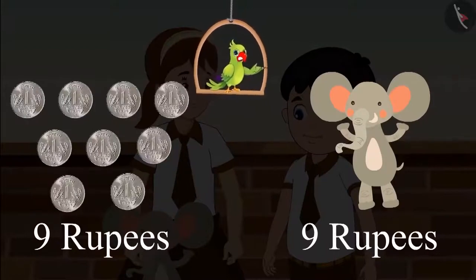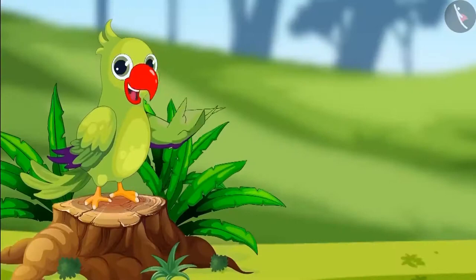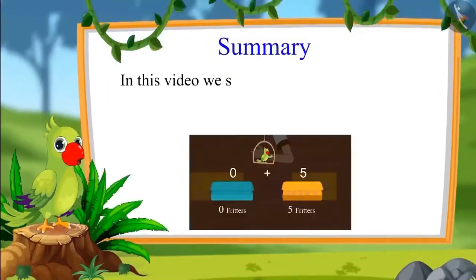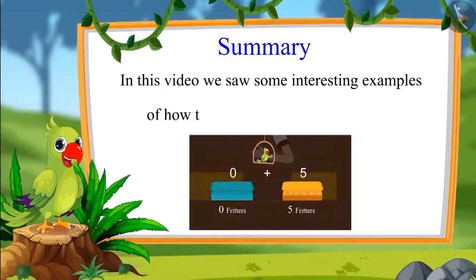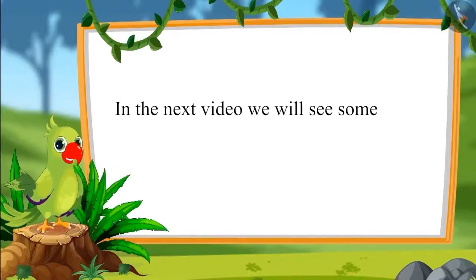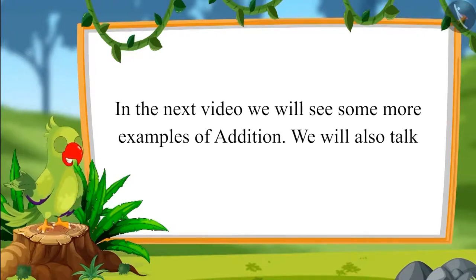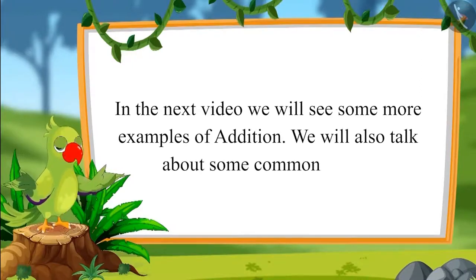Chotu and Aarti together have nine rupees, and the elephant also costs nine rupees. So will Chotu and Aarti be able to buy the stuffed toy? Oh yes, they bought the stuffed toy! That is all we have for today. In this video we saw some interesting examples of how to add single digit numbers. In the next video we will bring more exciting examples of addition and talk about common errors to avoid. Bye-bye children!